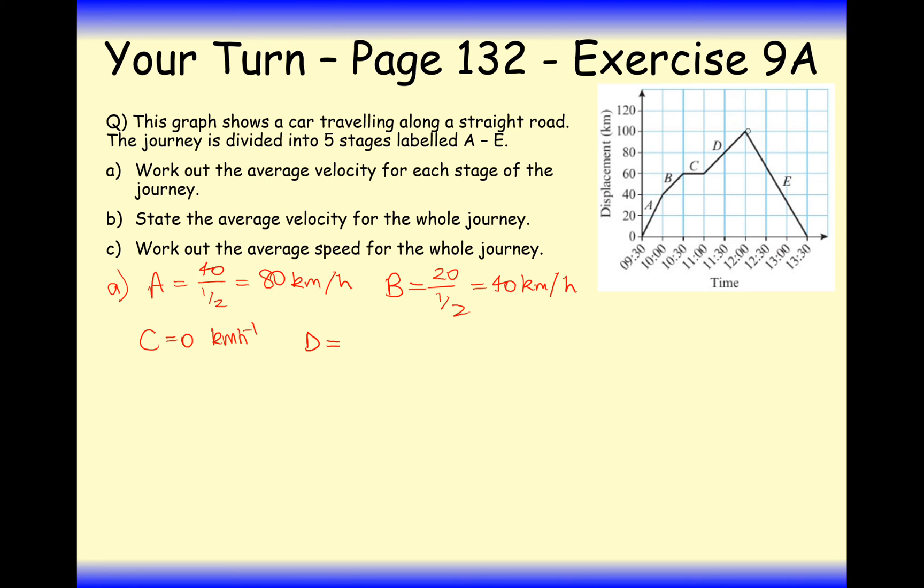D here, this is going to be a difference of 40 on the displacement, and that's going to have happened over one whole hour. So that's 40 kilometers per hour. Notice how the gradient of B and the gradient of D are virtually the same. They both go across one and up one of the squares. And that makes sense because their velocity is the same. For E here, remember we're working with negative displacement because we're working with velocity. So it's a displacement of minus 100 over 1.5 hours. So in this case it's 100 divided by 1.5, which is minus 66.7 kilometers per hour.